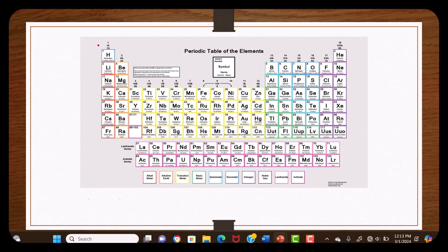This is called the main group elements, which involves the first and second columns, or 1A and 2A, and then columns 13 through 18, or 3A through 8A. These are called the main group elements.